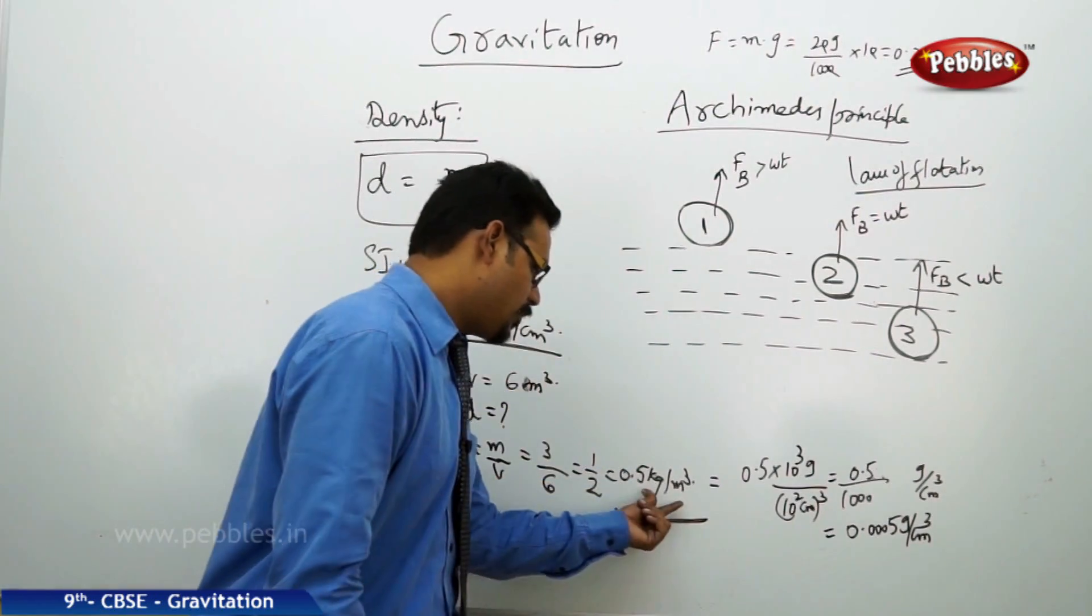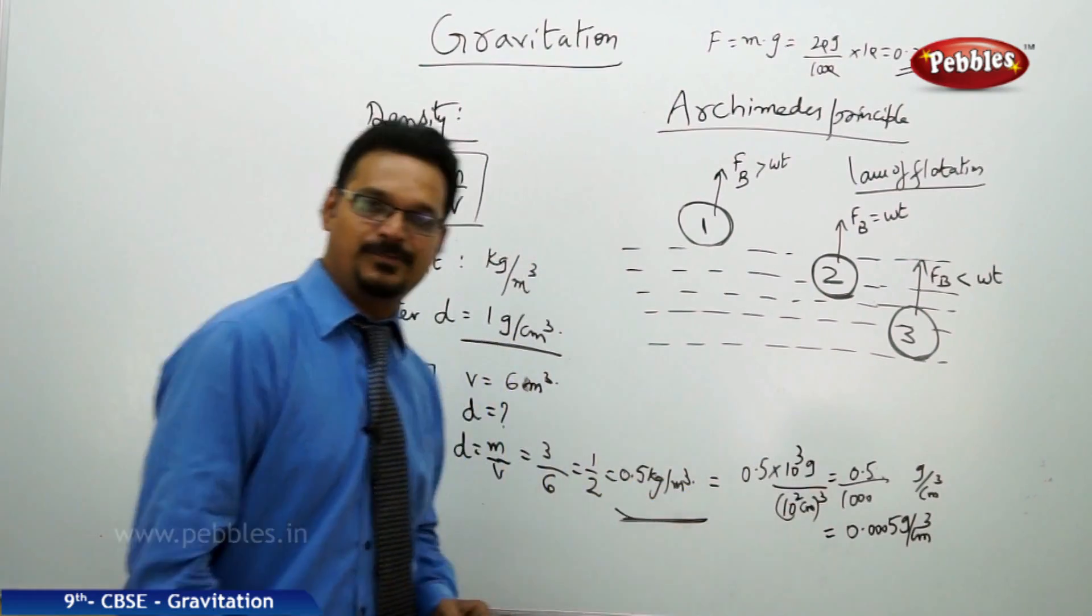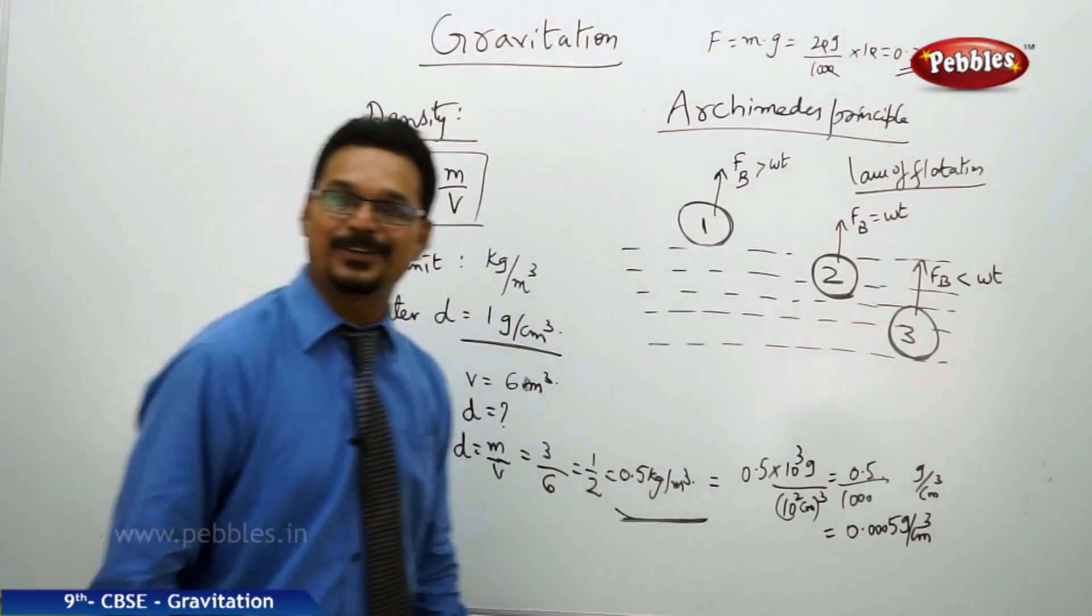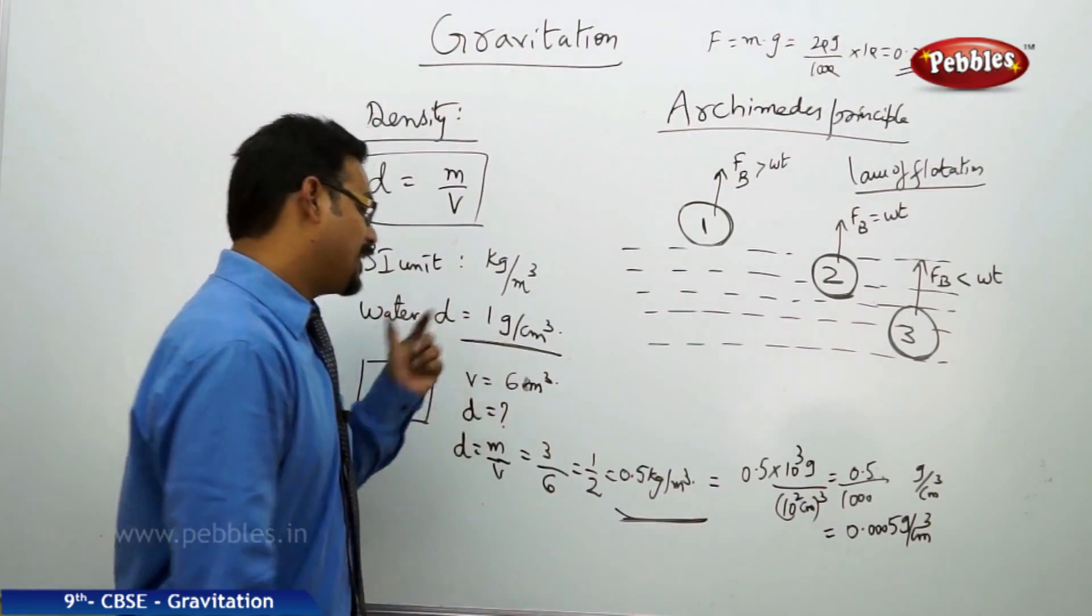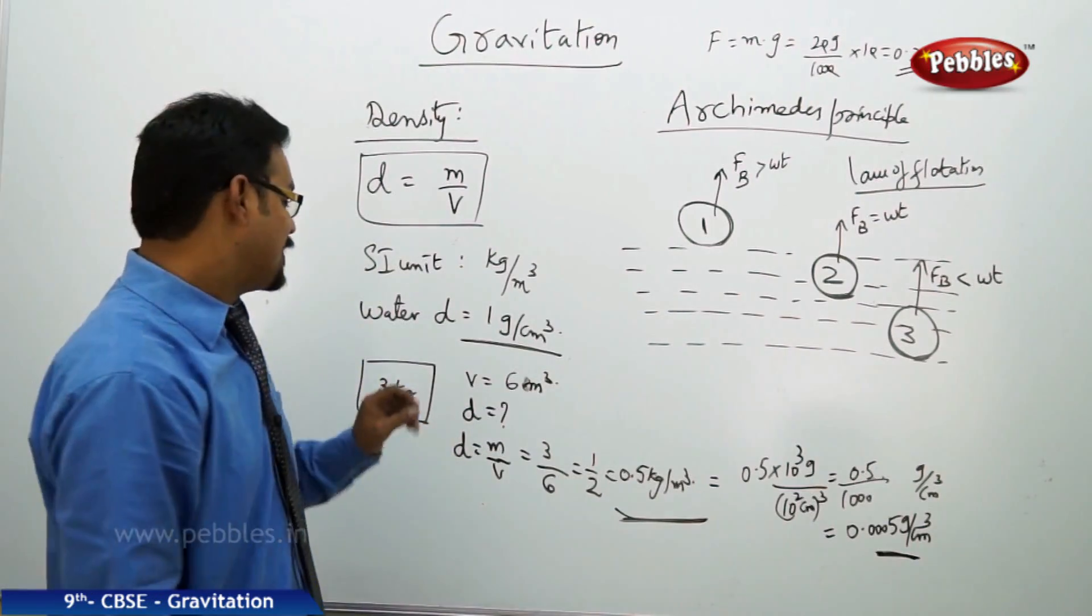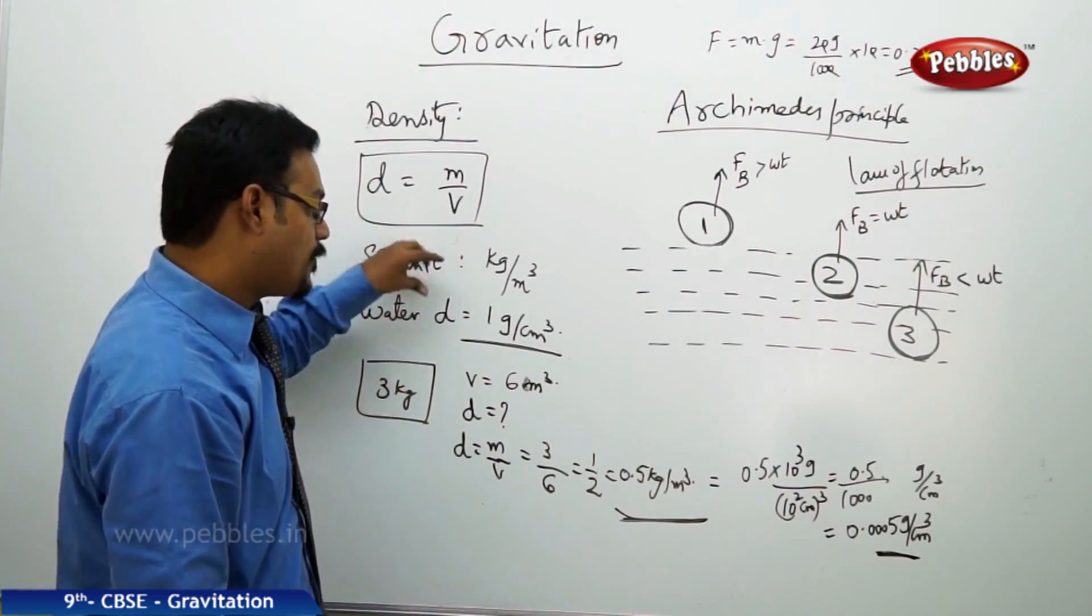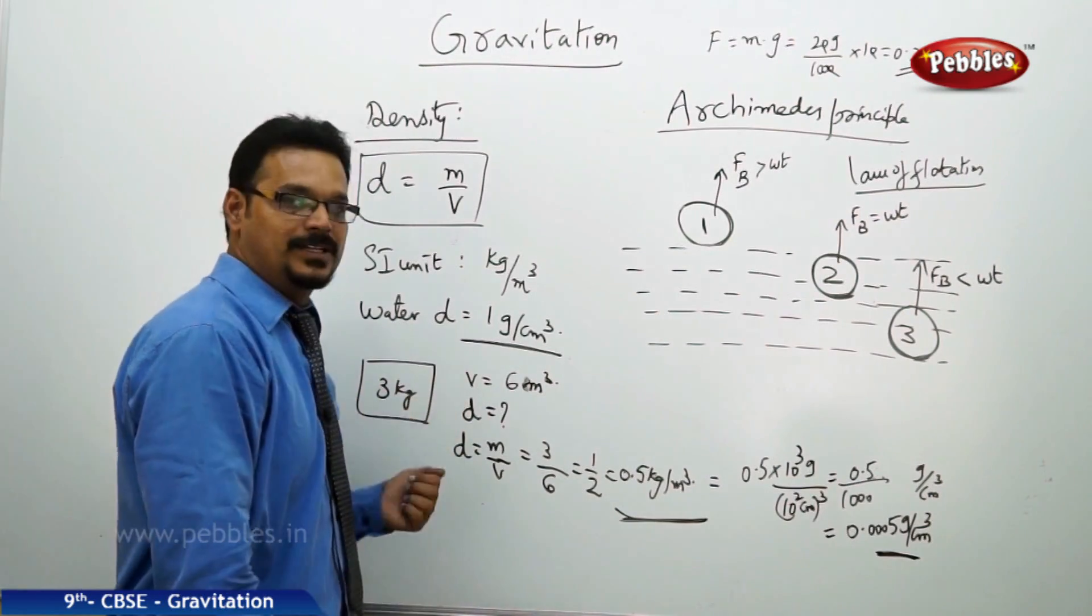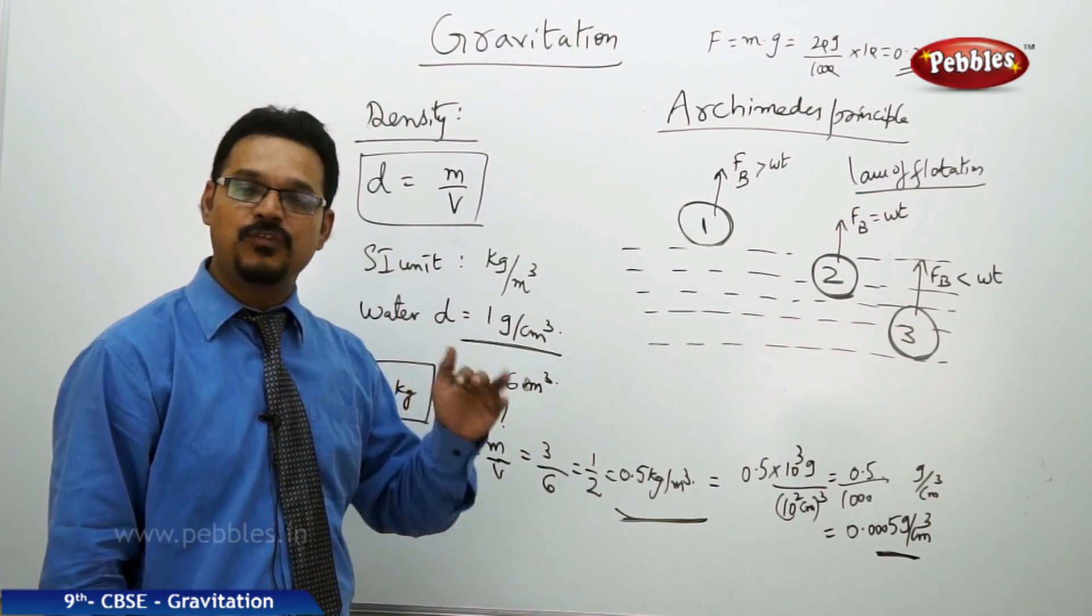So I have converted kilogram per meter cube to gram per centimeter cube. Now, this block has the density of 0.0005 gram per centimeter cube. Water has 1 gram per centimeter cube. Suppose this body is dropped in the water, now what happens? Does it sink or float?